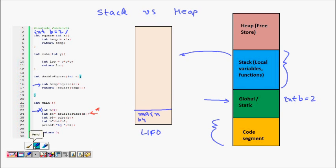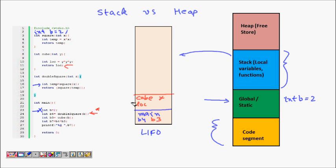Back in main, we define b3 and call cube(b). So cube is pushed onto the stack. It receives a copy y, has a local variable loc, computes y * y * y, and returns loc. When this line executes and returns, we come back to main, popping cube off the stack.